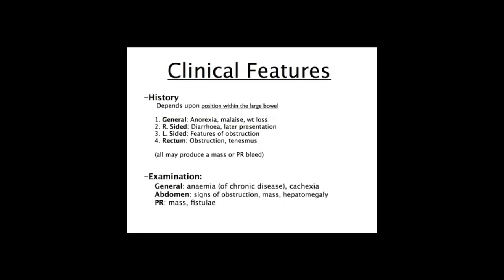In terms of examination, you're looking for general findings. There may be anaemia of chronic disease or iron deficiency anaemia if they're losing blood from the tumour. The patient can also look cachectic. In the abdomen, look for signs of obstruction, particularly associated with left-sided and rectal tumours. You're looking for a mass and an enlarged liver, which may indicate liver metastases. It's very important to do a PR examination looking for a rectal tumour, and also to look for fistulae, as rectal tumours can present this way.